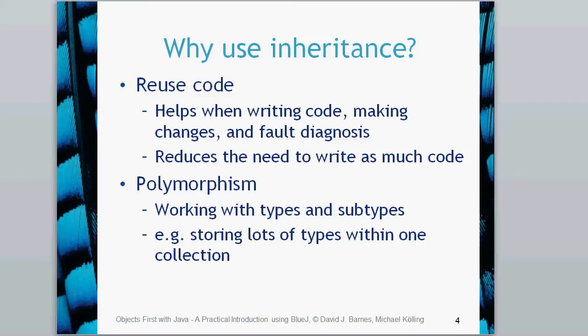Another reason is the handiness of polymorphism. We can work with types and subtypes and treat many different subtypes as a single type. For example, in the previous chapter we stored posts — the subtypes were message posts and photo posts — but we could store them all within a single collection. Those are the two reasons: code reuse and polymorphism.